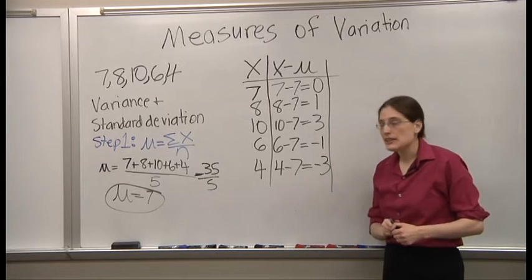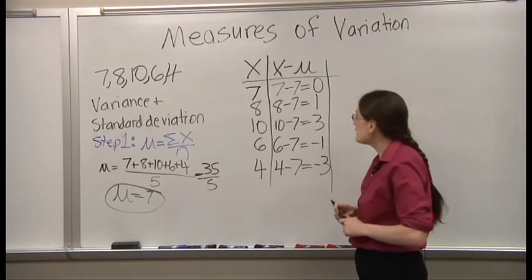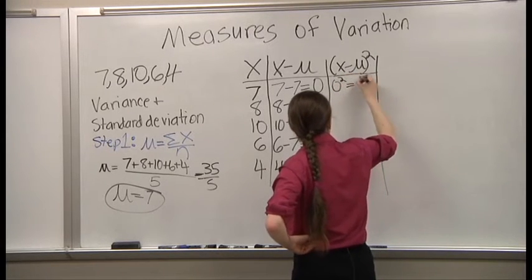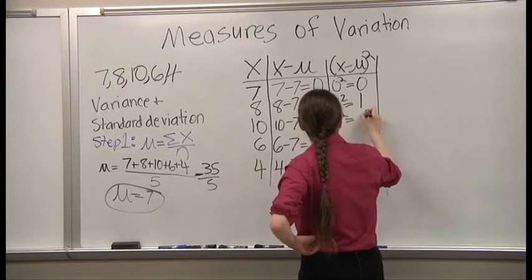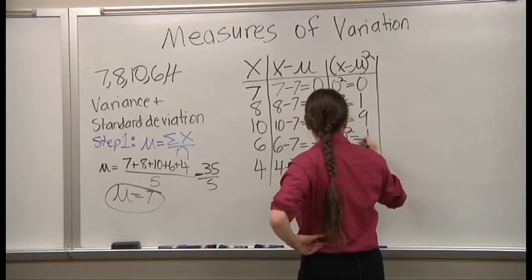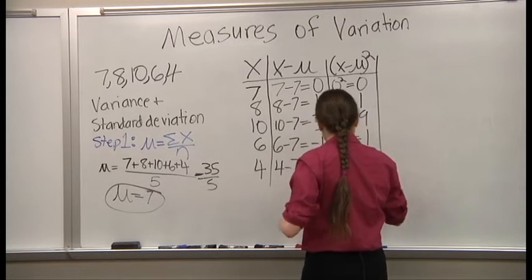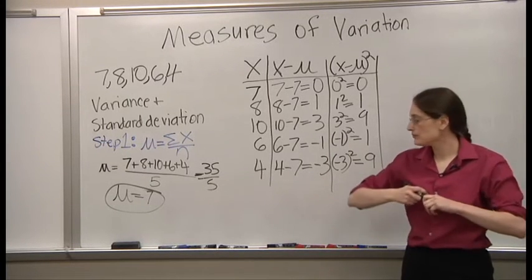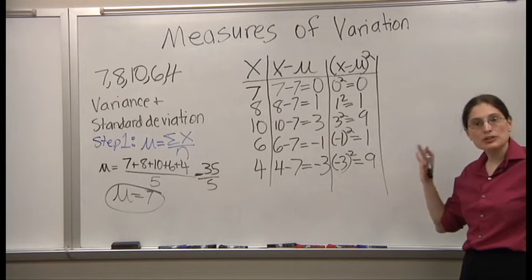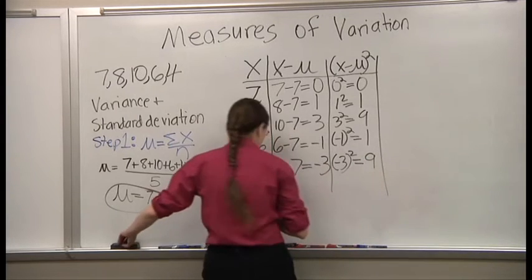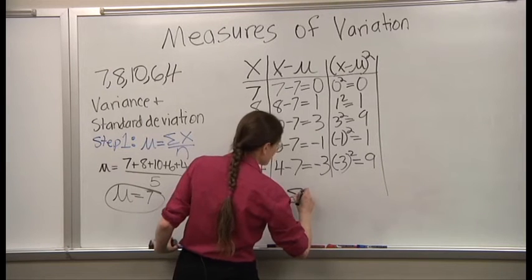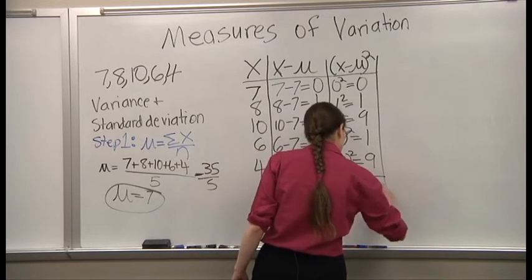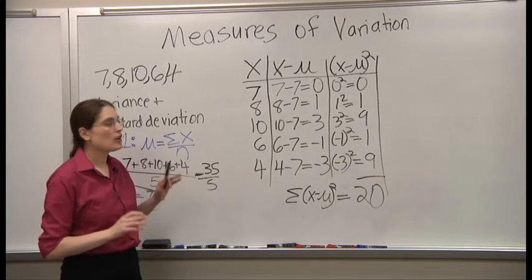The next thing you do is you take each of the second column and square it. This also makes all the numbers positive. This is helpful. So, the table's done. You add up the last column. So, this is the sum of the squares. That adds up to 20. We're actually almost done.